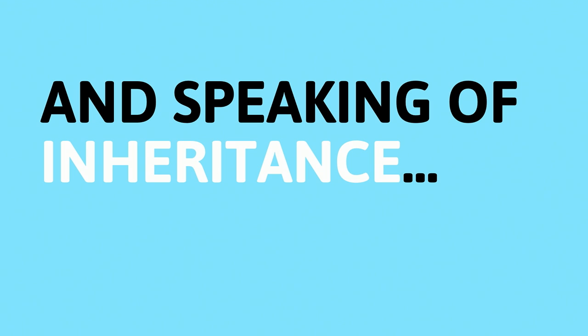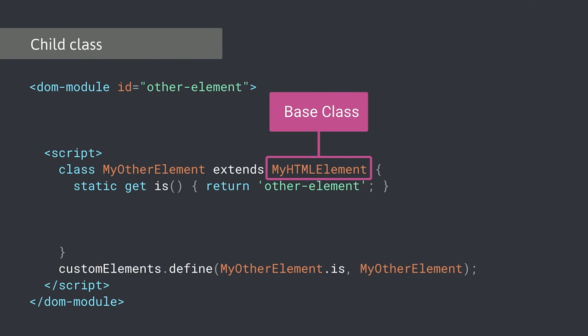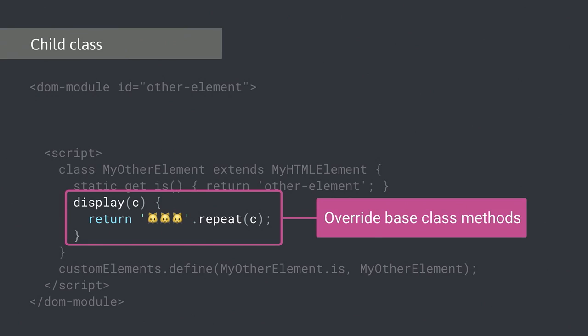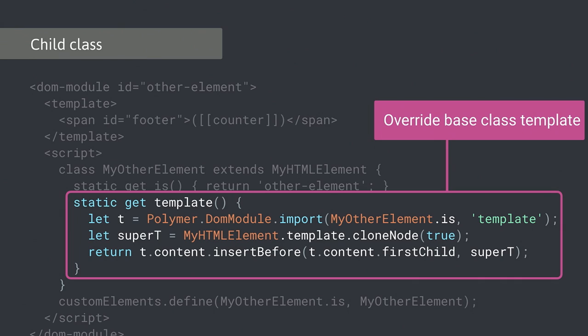The awesome thing about inheritance is that we actually get element inheritance now, which is something I've been asking for for years. If you want to extend from an element, all you have to do is update what you're extending. I can now have a child element that extends from this balloon element we've been working on. Maybe I don't want balloons — maybe I want cats in three times as many, because obviously I want more cats than balloons. I just update what the display function does, and that particular child displays a lot of cats. I can do the same with the template — override the template function and tell Polymer to take whatever template the parent had and shove my template at the end, or in the middle, or wherever a placeholder is.